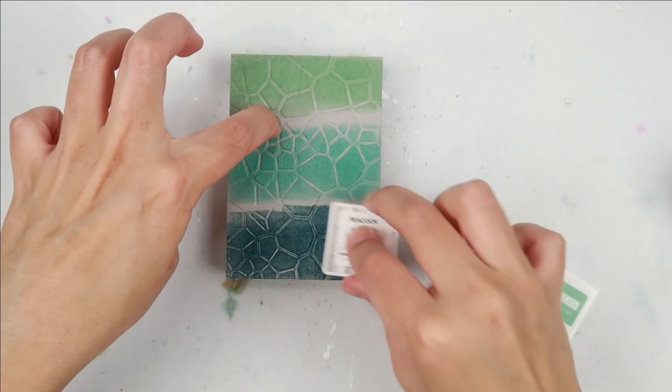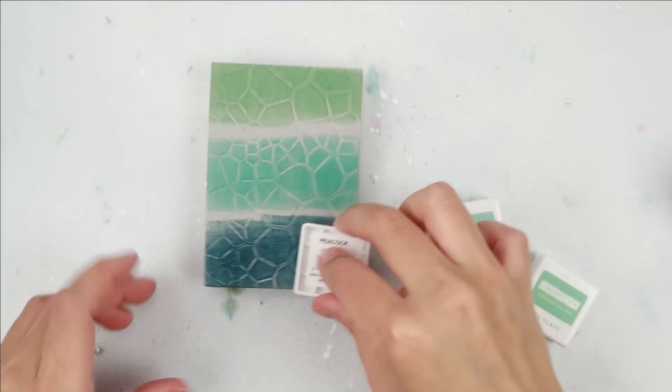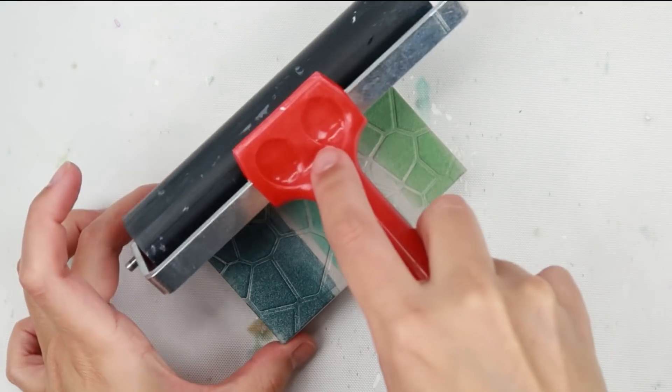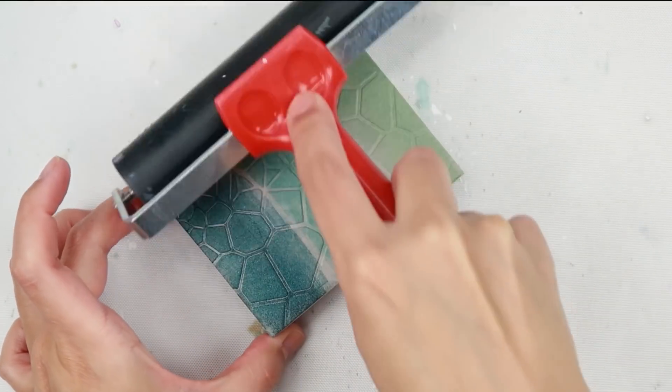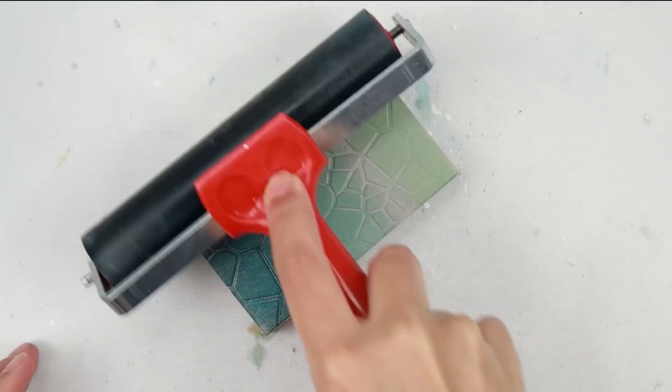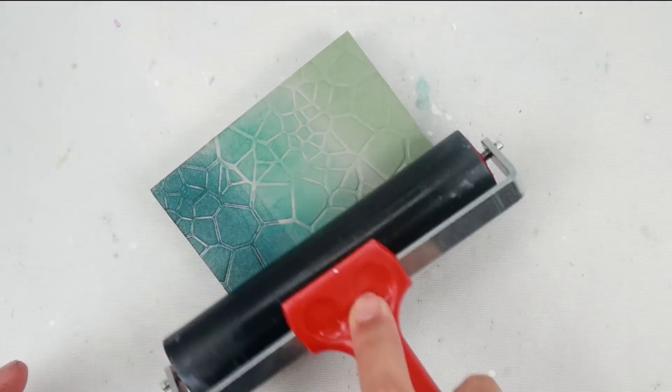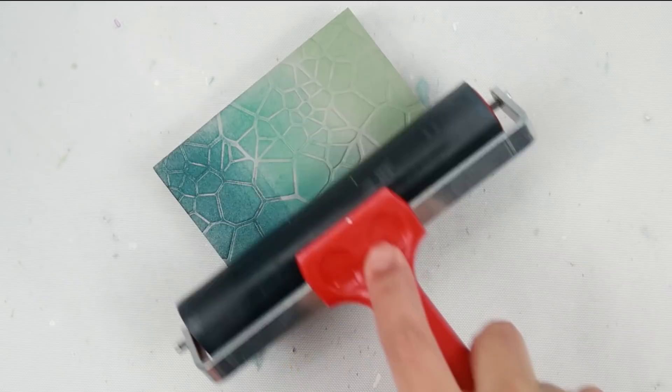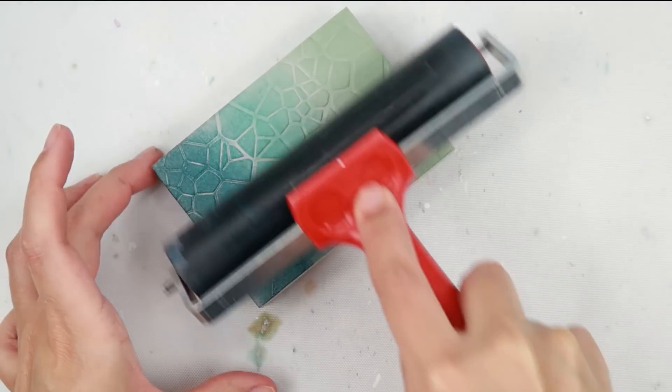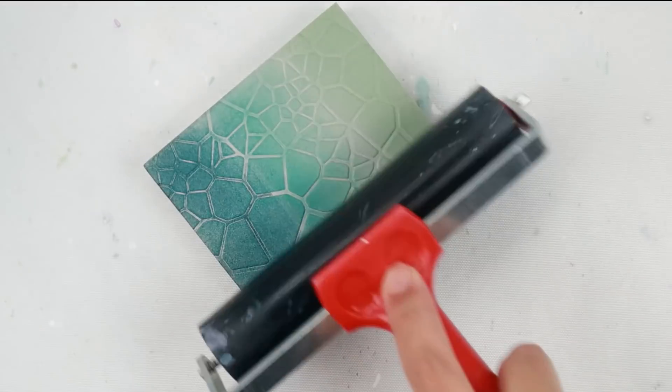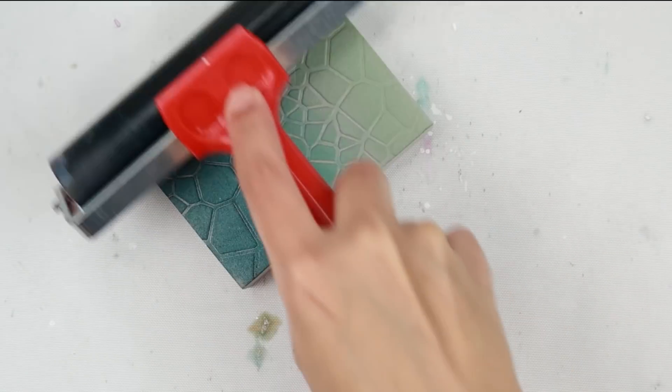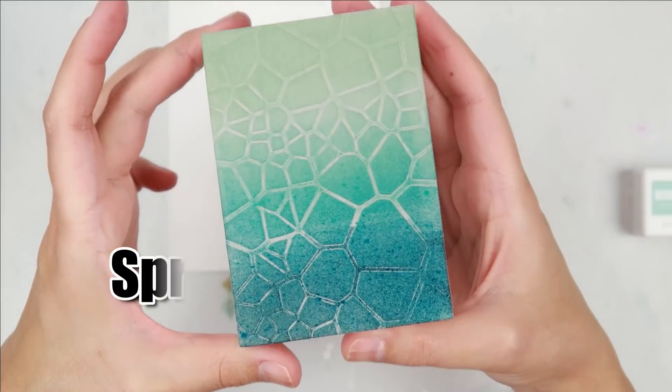I am leaving a space in between because I am going to be using a brayer to blend the colors together. When I am blending inks together, I like to use a six inch brayer. This is going to help eliminate those lines that you will get if you were to use a one or two inch brayer. You also don't have to move your brayer around too much, just slightly back and forth to get a seamless blend within the colors.